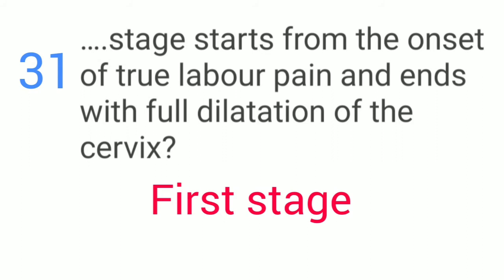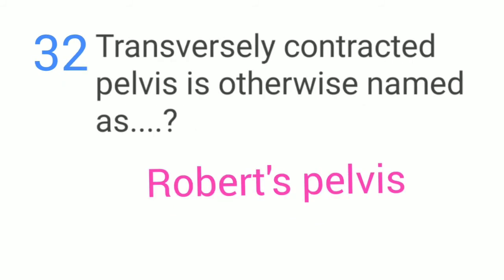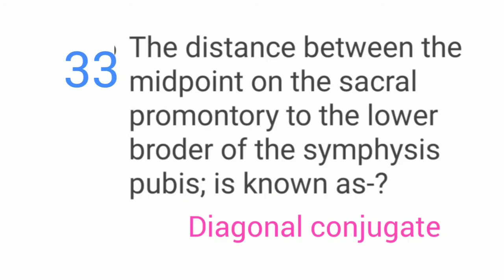The first stage of labor starts from the onset of true labor pain and ends with the full dilatation of the cervix. Transversely contracted pelvis is otherwise named as Robert's pelvis. The distance between the midpoint on the sacral promontory to the lower border of the symphysis pubis is known as diagonal conjugate.